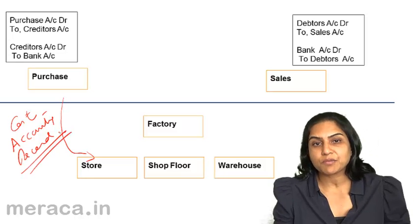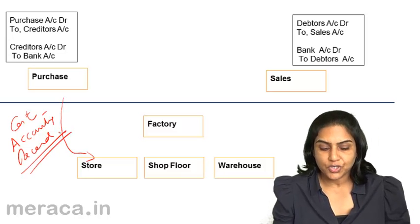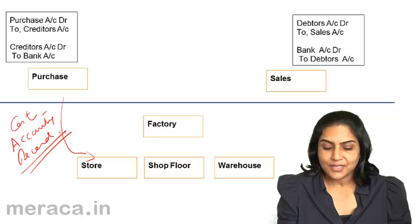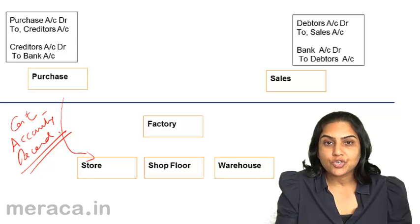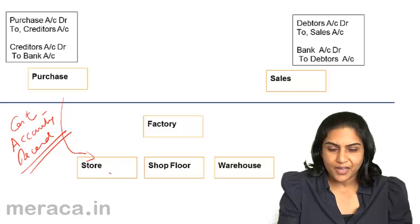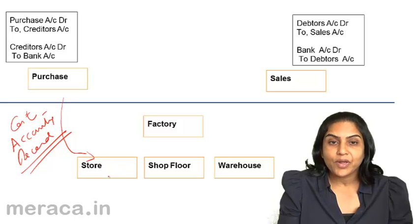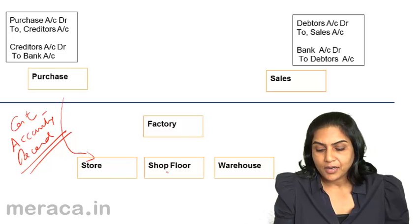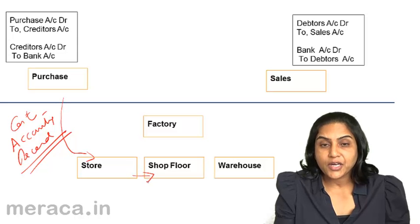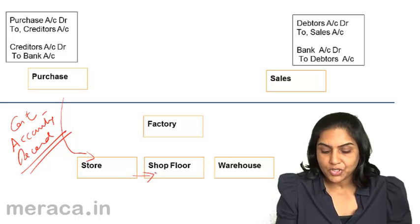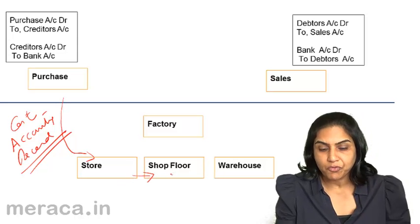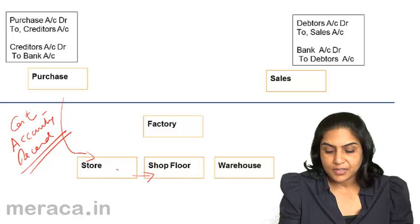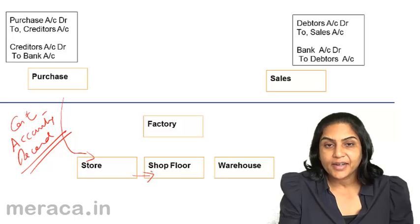Entries are also passed by cost accountants, the details of which would be discussed at a more advanced level. Simply put, the goods are stored in the stores area of the factory. As and when raw materials are required for production and the materials move into the shop floor, an entry is passed debiting the work in progress and crediting the materials.